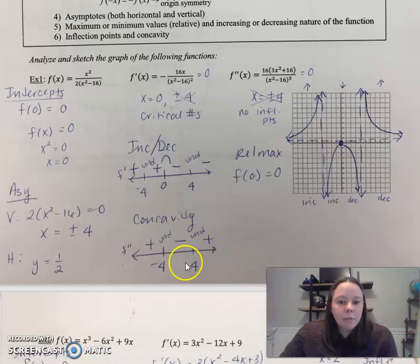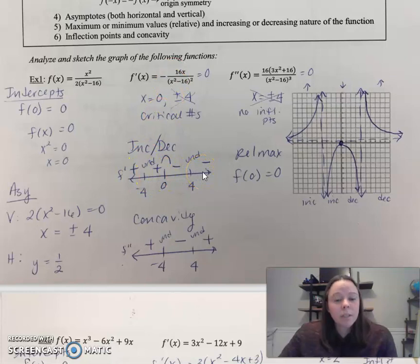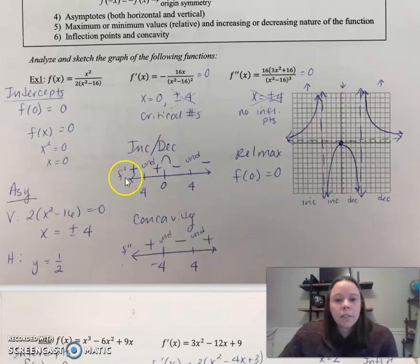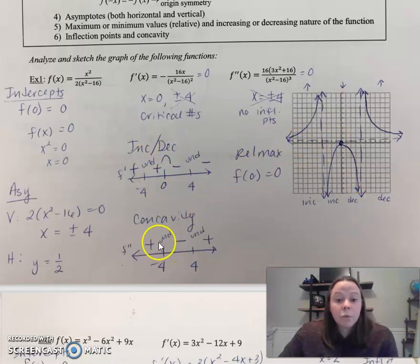Notice I put 'undefined' above my asymptotes on the number line so I'm not tempted to call that an inflection point just because I changed concavity — because no, that's not true. Now, check your intervals in the first derivative to see if it's increasing or decreasing, just like the first derivative test. Then check your intervals for concavity using the second derivative. We're increasing on both sides but go from increasing to decreasing at zero, and zero is defined — that's a relative max. We do change concavity, but since the asymptotes are not defined on the original function, we don't have any inflection points.